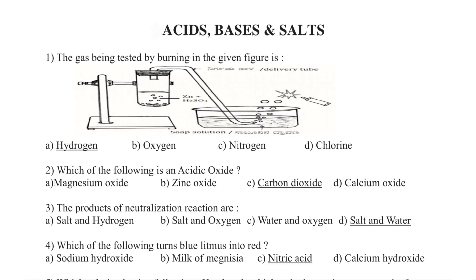Question number 1. The gas being tested by burning in the given figure is: Option A — Hydrogen, B — Oxygen, C — Nitrogen, and Option D — Chlorine.